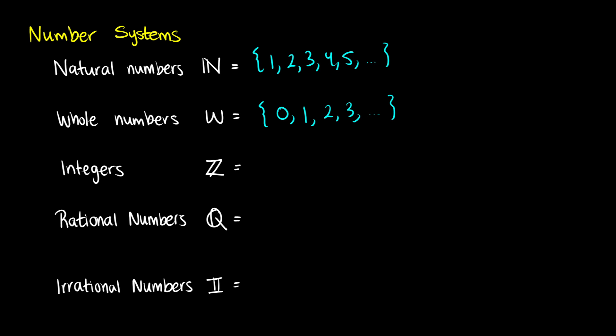Some texts consider the natural numbers to start at 0 — this is not a set convention. Some people choose the natural numbers to start at 1, others at 0, but in most pre-calculus or college algebra texts you'll find that the natural numbers tend to start at 1 and whole numbers start at 0.